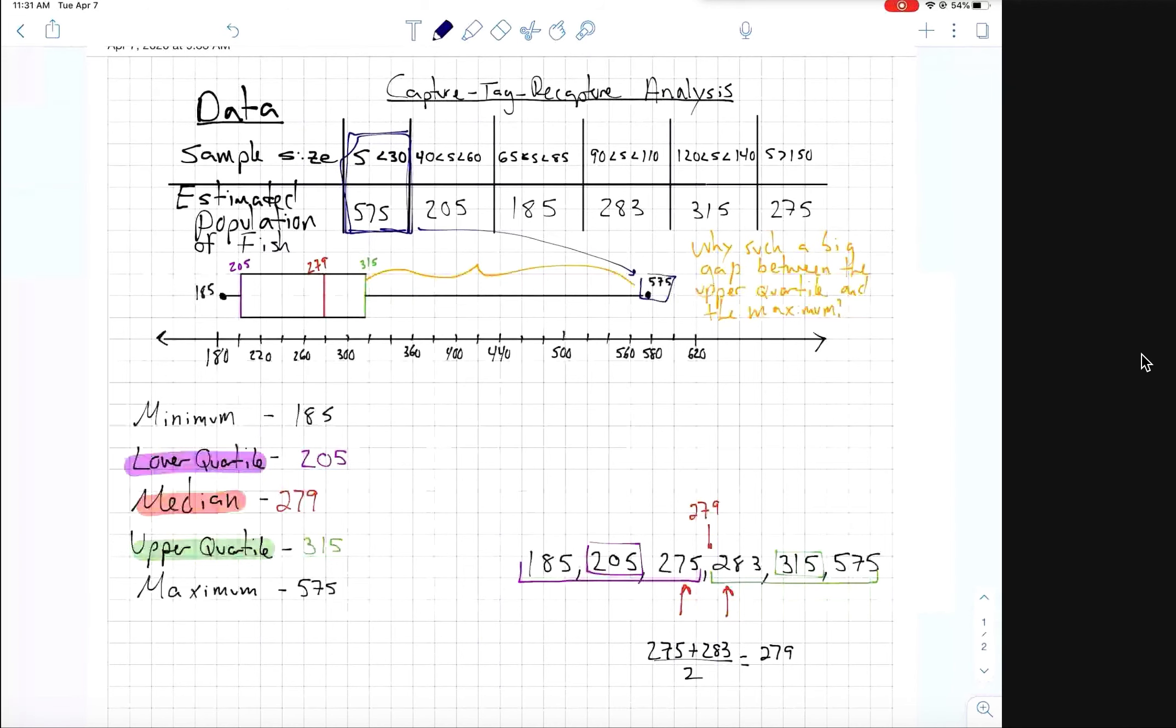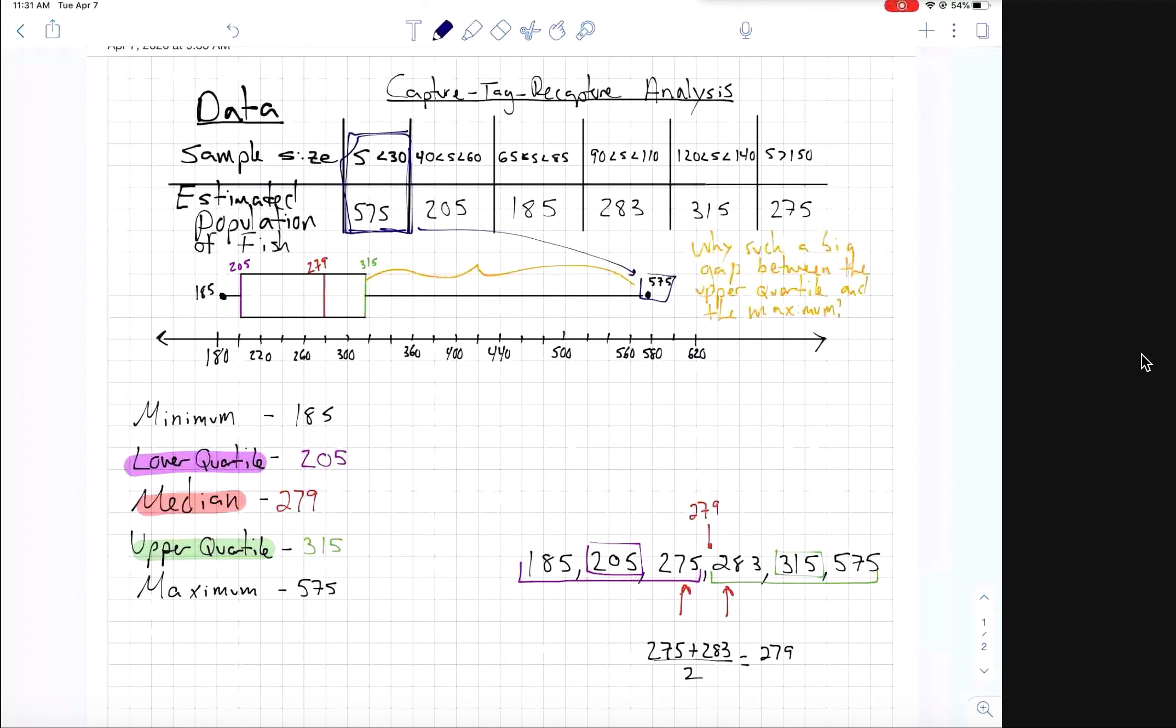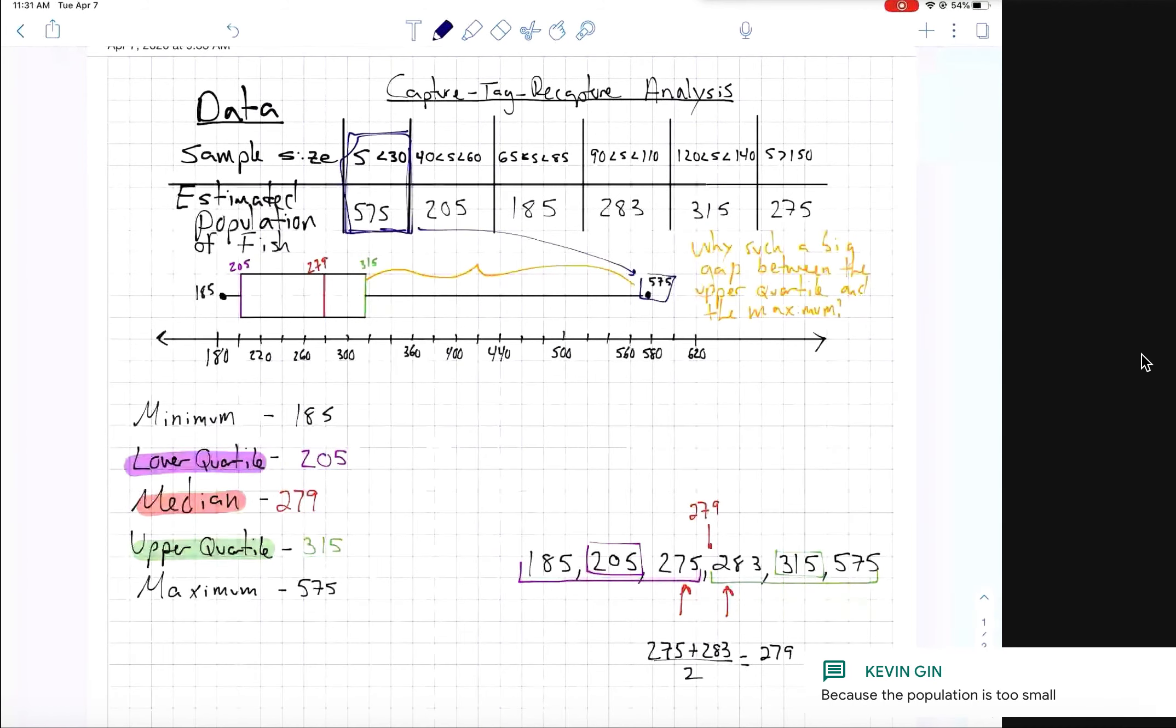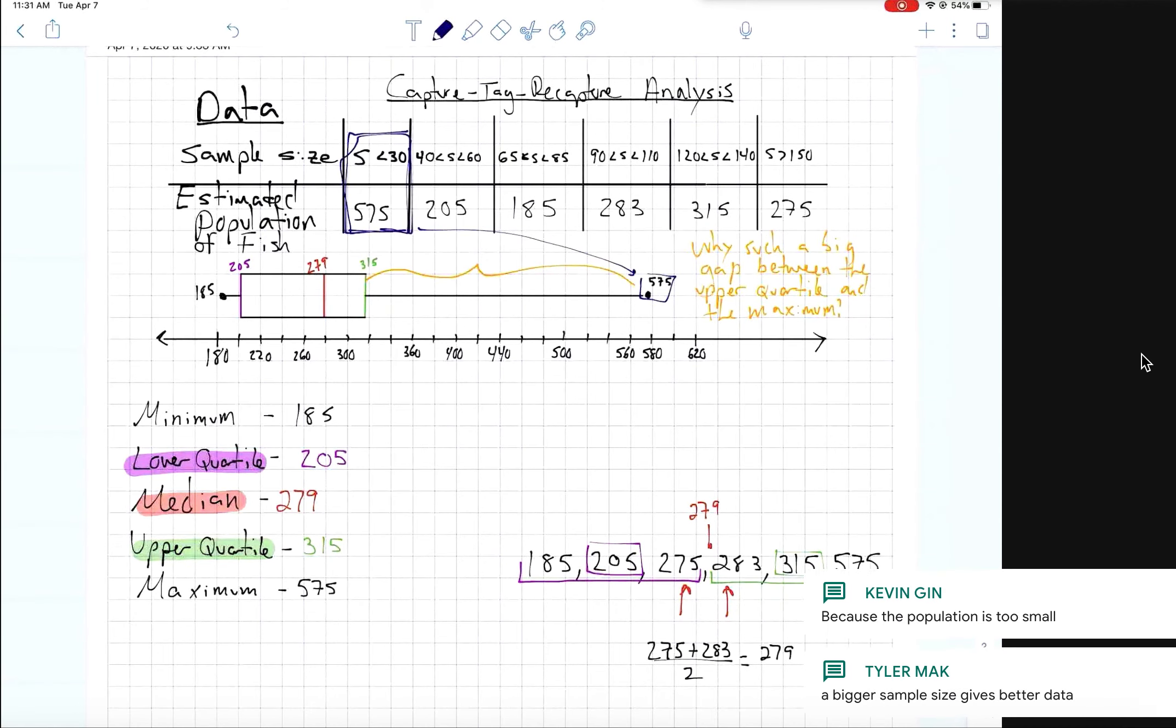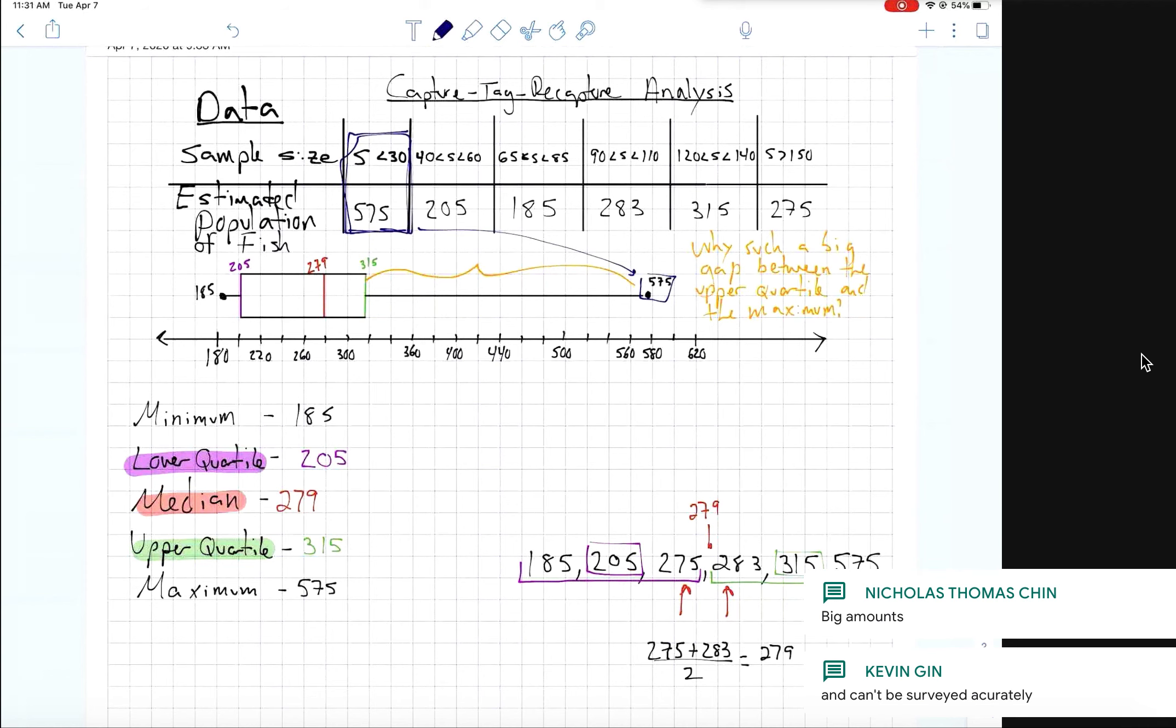Think about when we do a survey or think about when we talk - you're relying on chance. Yeah, you're relying on chance. Good, right? You're relying on how many fish you catch. So is it better to catch a small amount of fish for your experiment or catch a large amount of fish? The population is too small. Good. A bigger sample gives better data. That's absolutely true. Big amount. So if we have a bigger sample, we'll get better data.